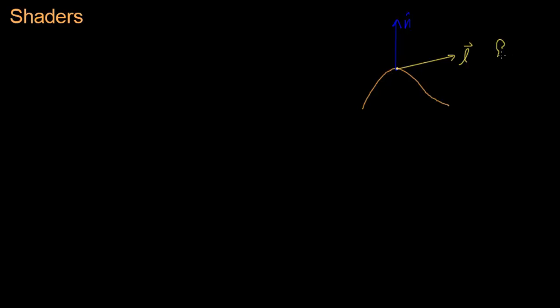So this is the light over here and this l is the vector that points to the light, and we use Lambertian surface properties to calculate n dot l, which was the lighting of the surface at that point.